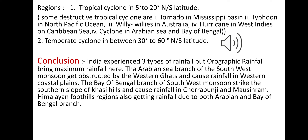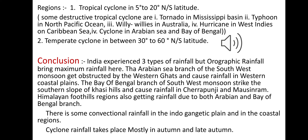There is some convectional rainfall in the Indo-Gangetic plains and in the coastal regions. Cyclonic rainfall takes place mostly in the autumn and late autumn seasons. Thank you, everybody. If you have any queries, please comment below.